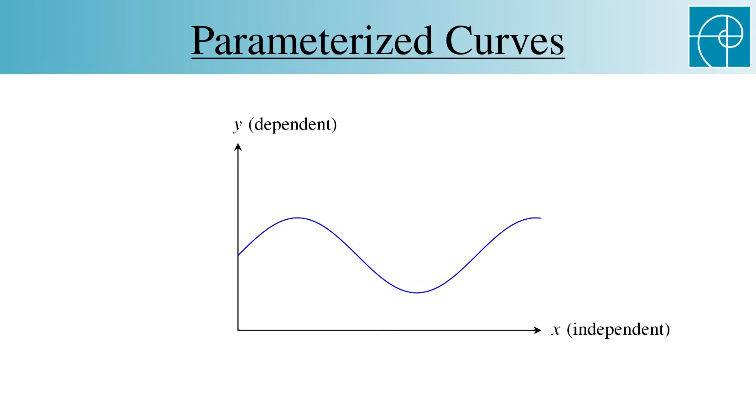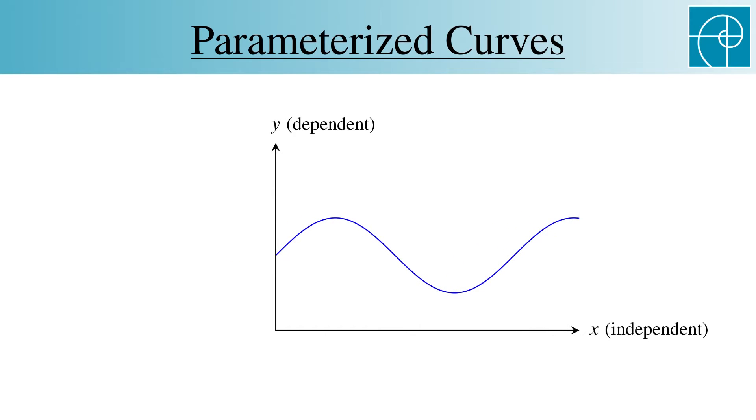Suppose, however, that we only graph the output, in other words, the range. Let's put another copy of the y-axis here, and don't focus on the original graph. It's there now just for reference. As we move inputs along the x-axis, our outputs are traced on the y-axis, generating this line segment.